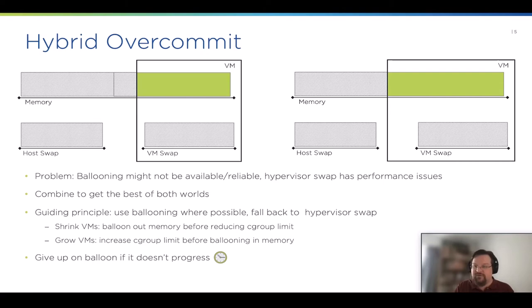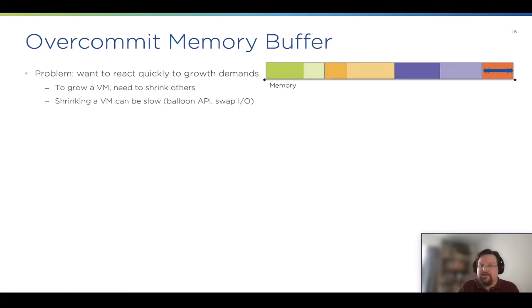Of course, as I said, if the balloon driver isn't available or just doesn't want to comply, then eventually you give up and just use hard cgroup limits.